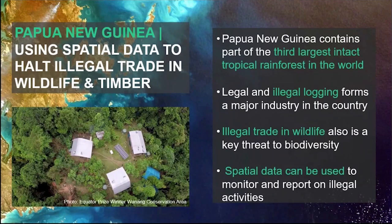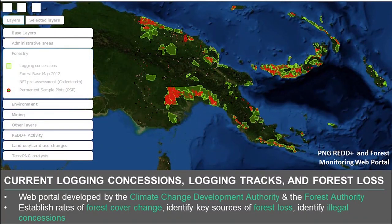Finally, let's travel to Papua New Guinea. Papua New Guinea contains the third largest tract of intact tropical rainforests in the world, which it shares with Indonesia. Logging — both illegal and legal — is a major industry, and levels of illegal wildlife trade are also very high. The government of Papua New Guinea is using spatial data and monitoring tools to help curtail illegal activities. Supported by the REDD+ program, two PNG government authorities have created a web portal showing where logging concessions are most active — logging concessions shown in green, and forest loss by year shown in different shades of red. This map is available at high resolution, helping the government identify logging concessions extending beyond permitted boundaries, as well as forest loss due to agriculture and oil palm cultivation.